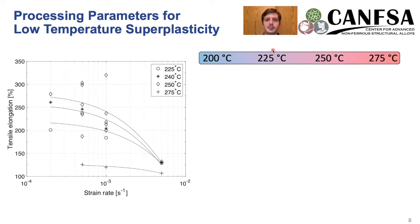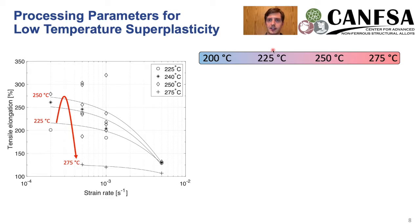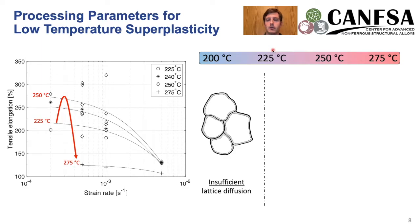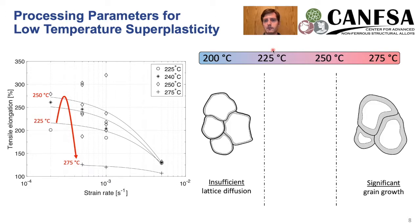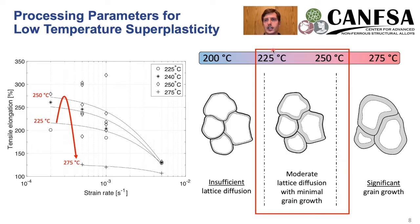There seems to be a certain temperature limit for low temperature superplasticity. We see a peak in tensile elongations around 250 degrees Celsius, and it starts to diminish if we go below or above that. Below 225 degrees Celsius we have insufficient lattice diffusion, and above about 250 degrees Celsius we have significant grain growth. So there's a sweet spot in between where we have moderate lattice diffusion to accommodate grain boundary sliding while also minimizing grain growth.